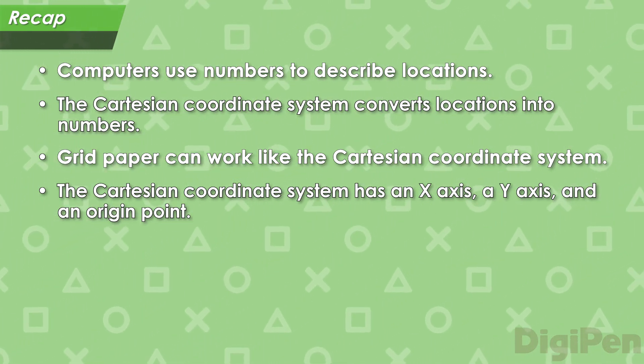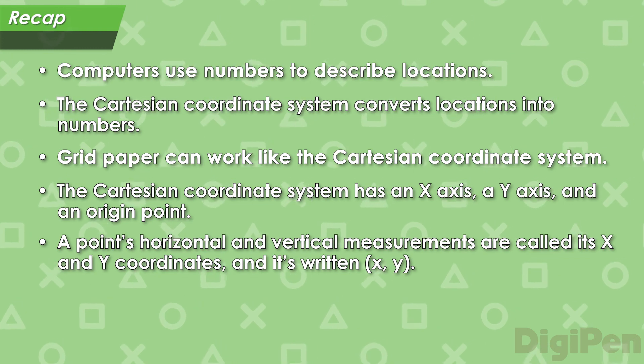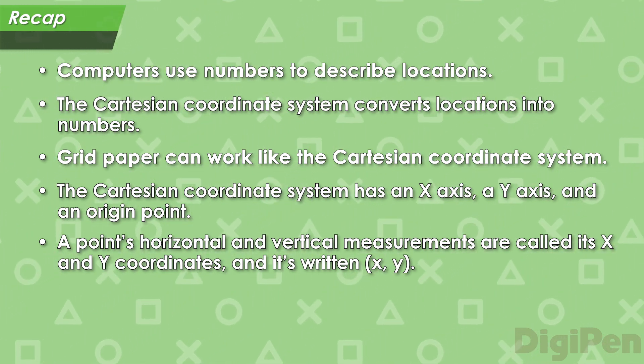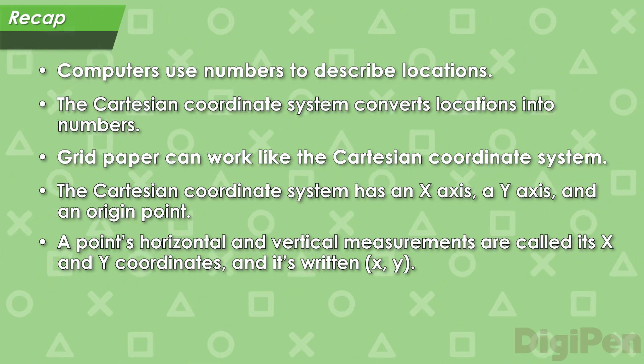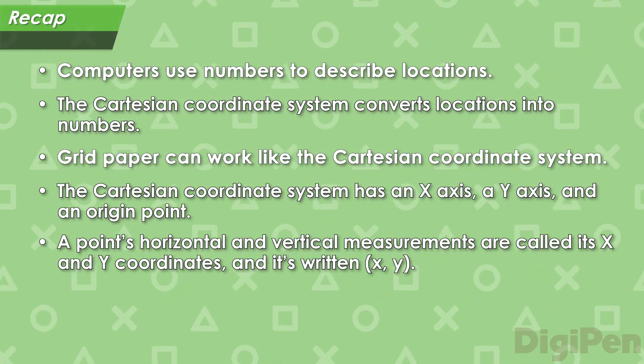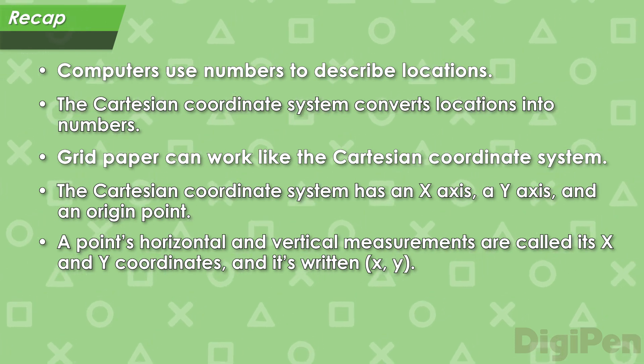Then, we showed how the horizontal and vertical measurements of a point in the Cartesian coordinate system are called its x and y coordinates, and they're written as x, y.